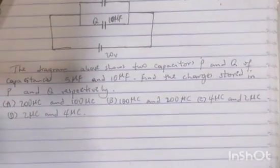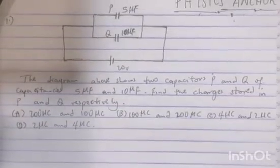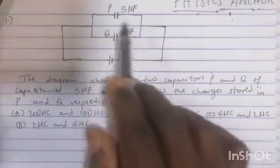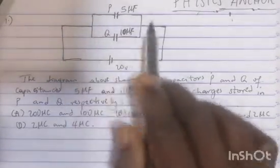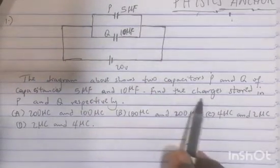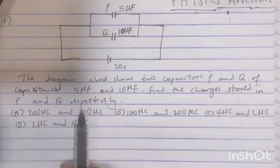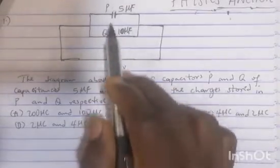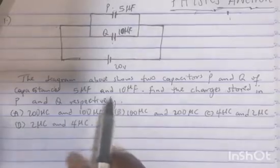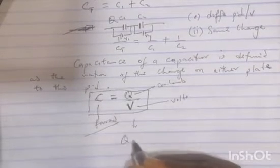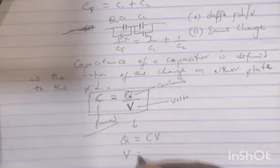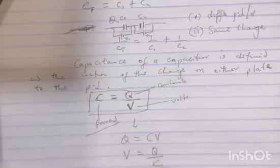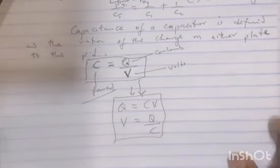Having understood this foundation, let's go to the question. In this question, we have two capacitors of different capacitances connected in parallel, and they want us to find the charges stored in P and Q. They will have the same potential difference across them because they are connected in parallel, but different charges. Our formula C = Q/V can be rearranged as Q = CV and V = Q/C.